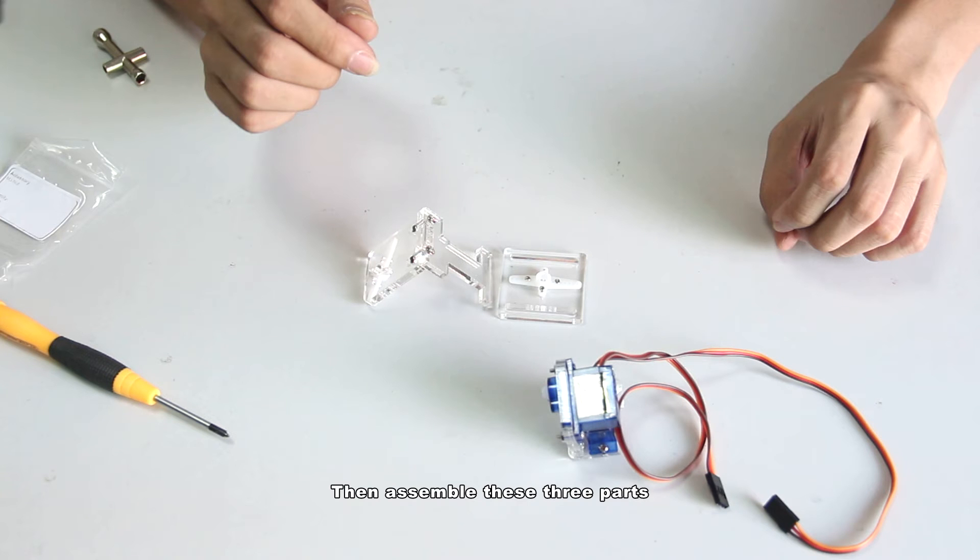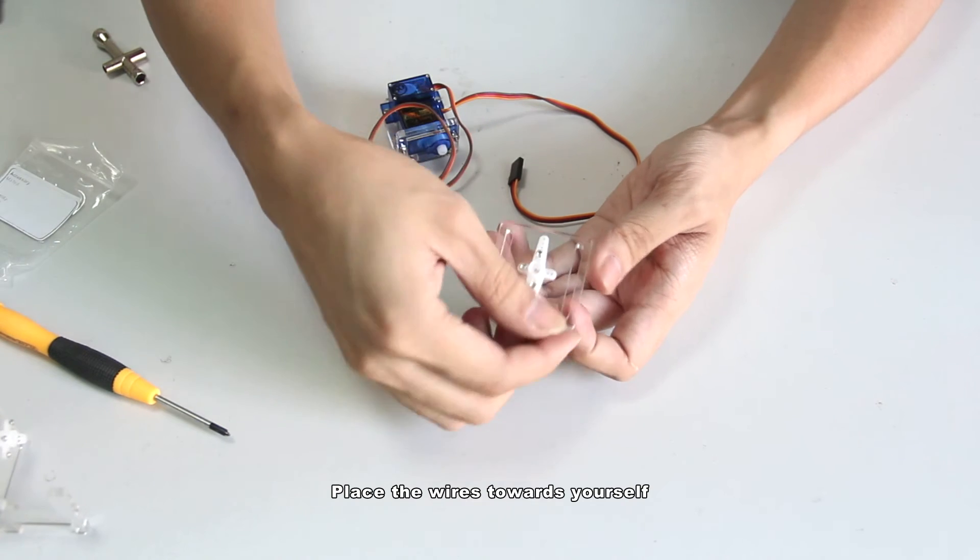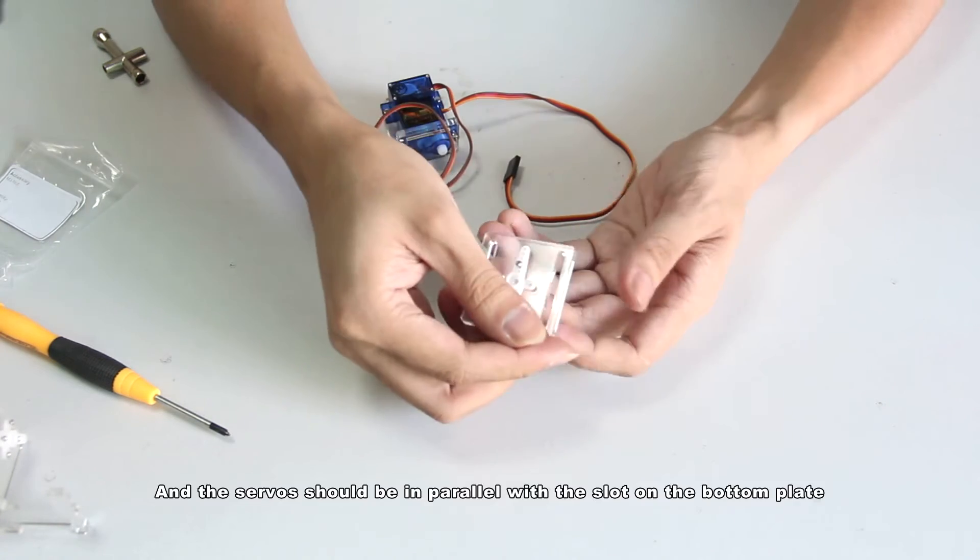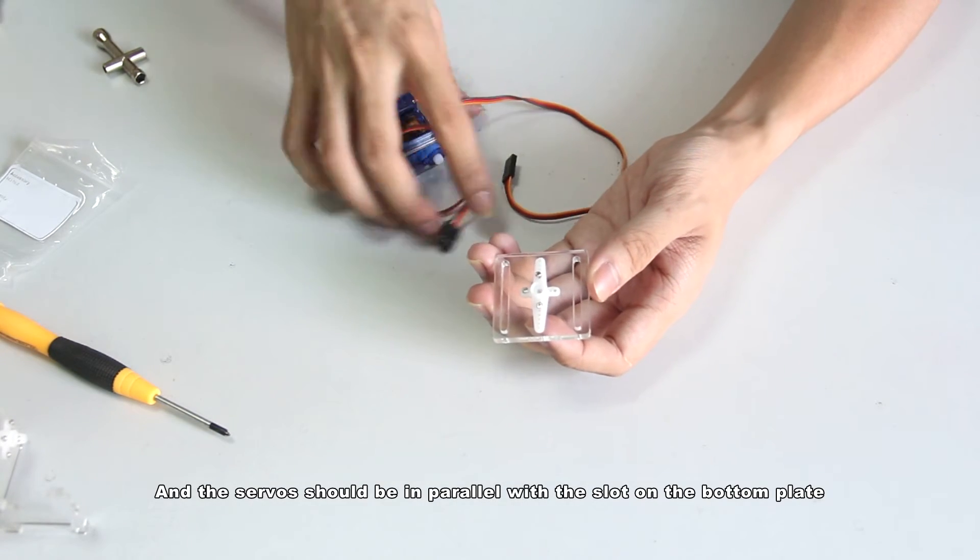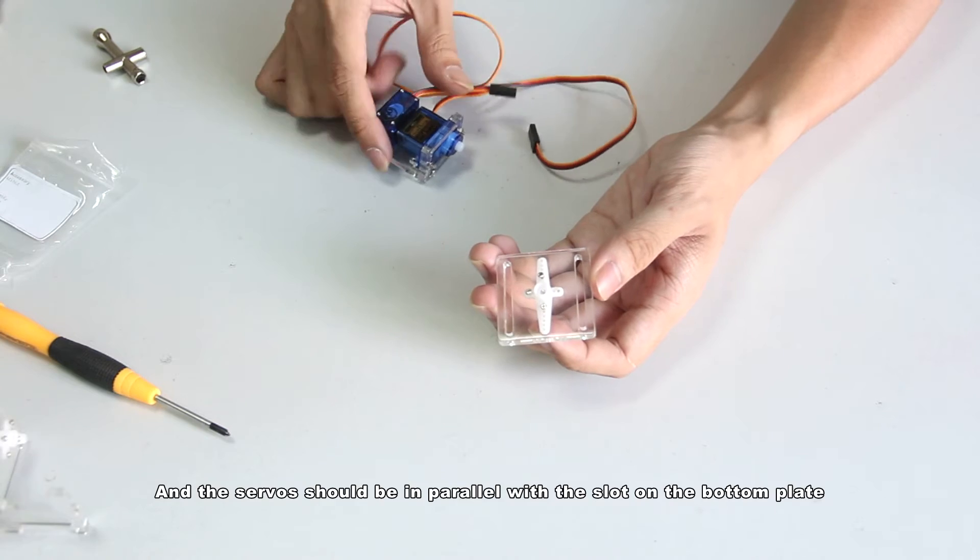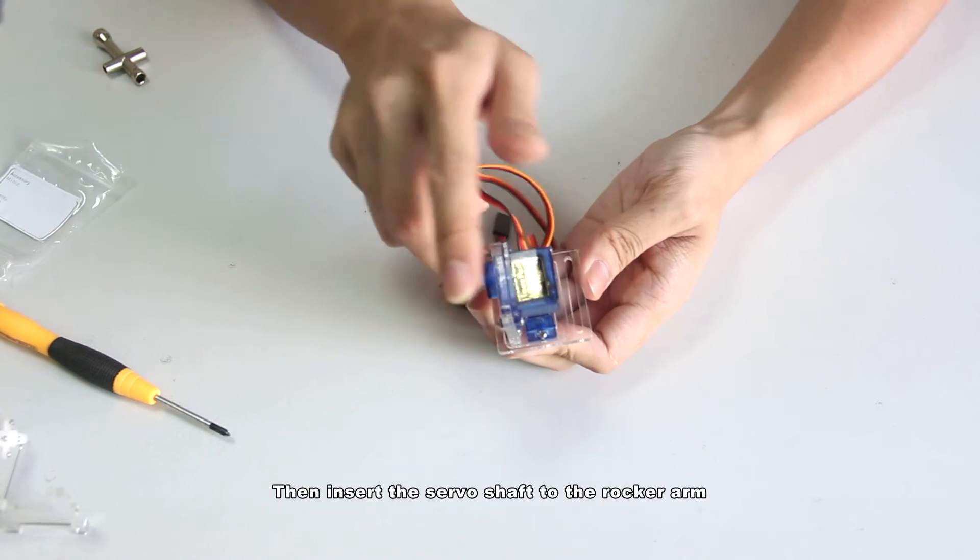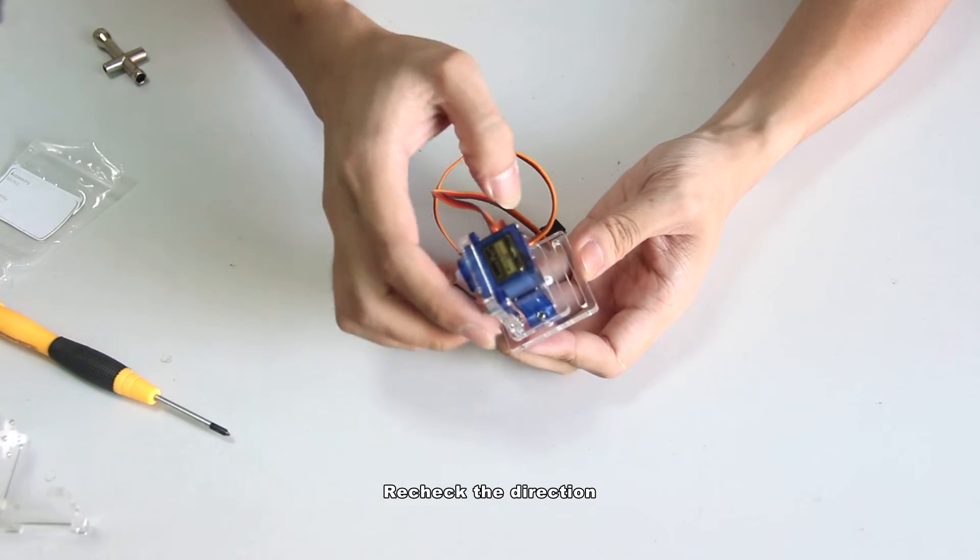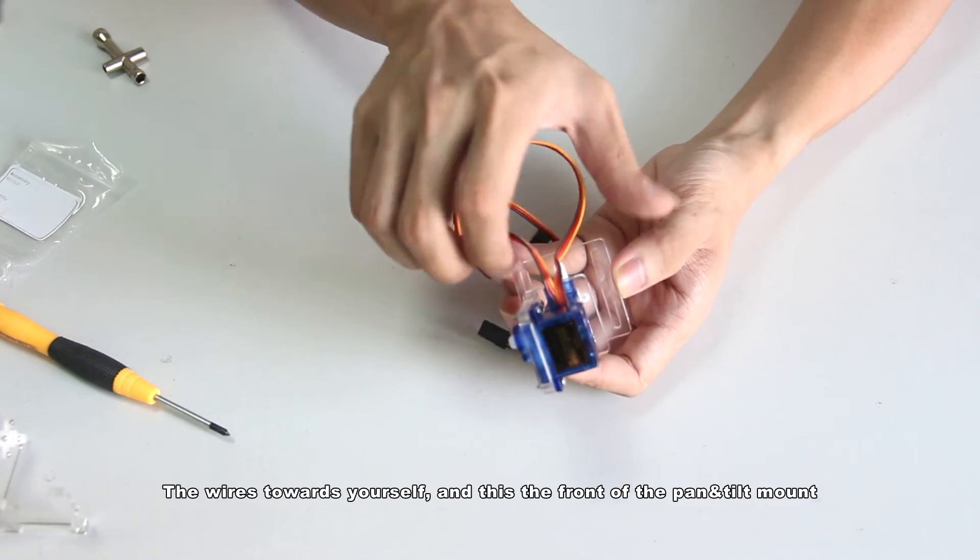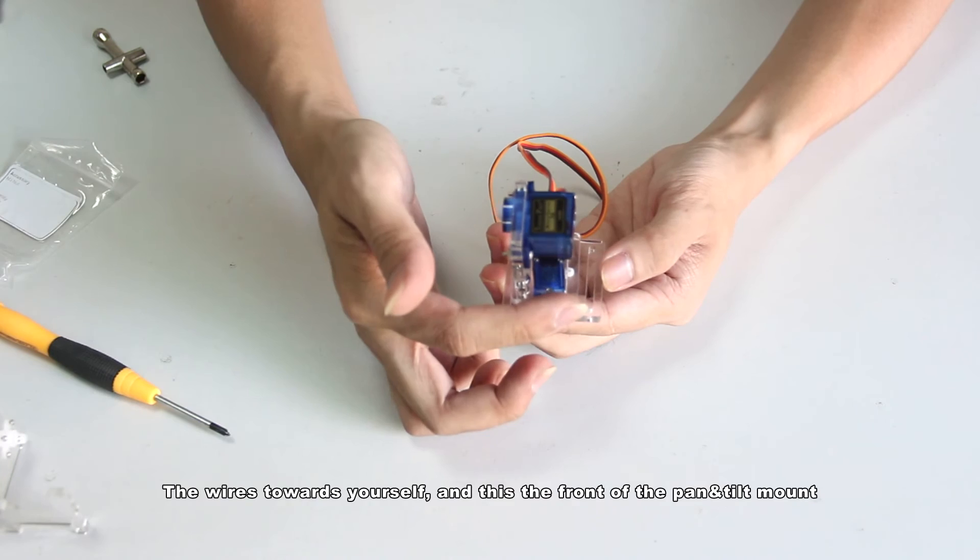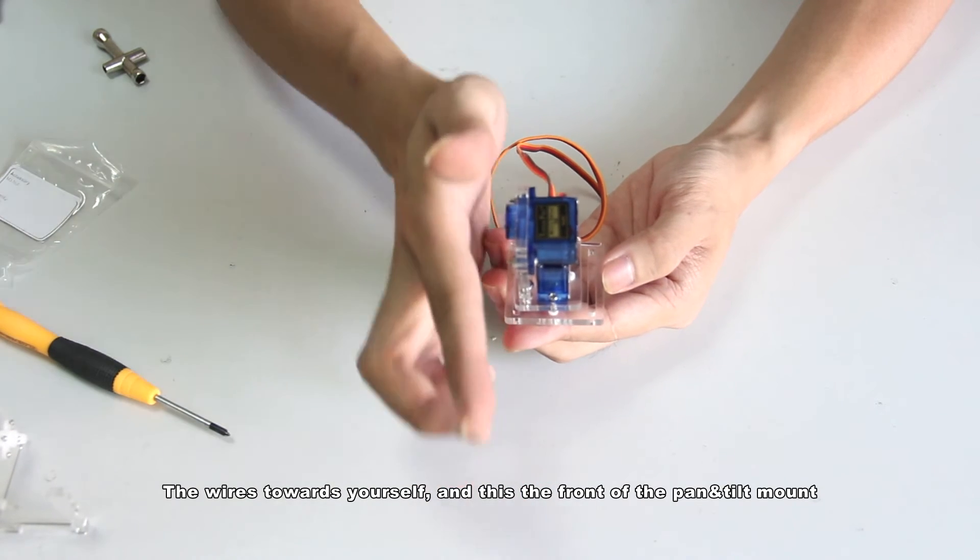Then assemble these three parts. First take the servos. Place the wires towards yourself. And the servos should be in parallel with the slots on the bottom plate. Then insert the servo shaft to the rocker arm. Check the direction. The wires towards yourself. And this is the front of the pan and tilt mount.